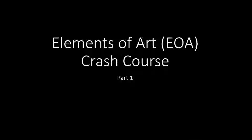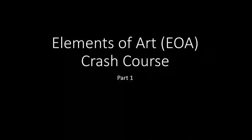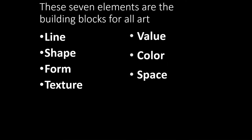Welcome to my first installment of the crash course through the elements of art. This crash course has two separate parts covering all seven elements of art, and at the end of each section we will have a short lesson or activity for you to accomplish. The seven elements of art are line, shape, form, texture, value, color, and space. Today we are covering line, shape, and value.